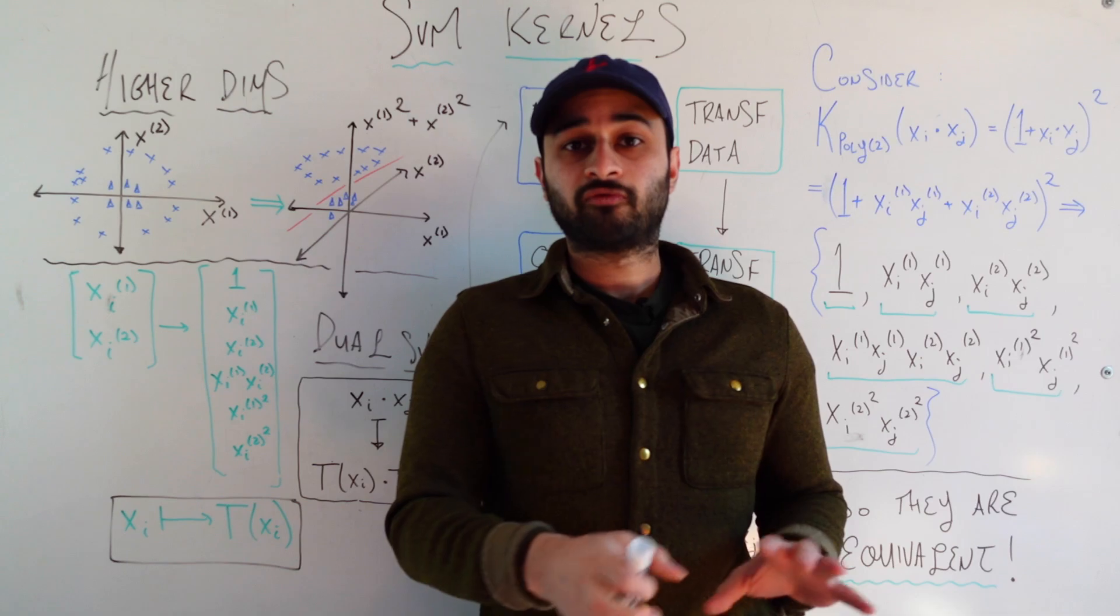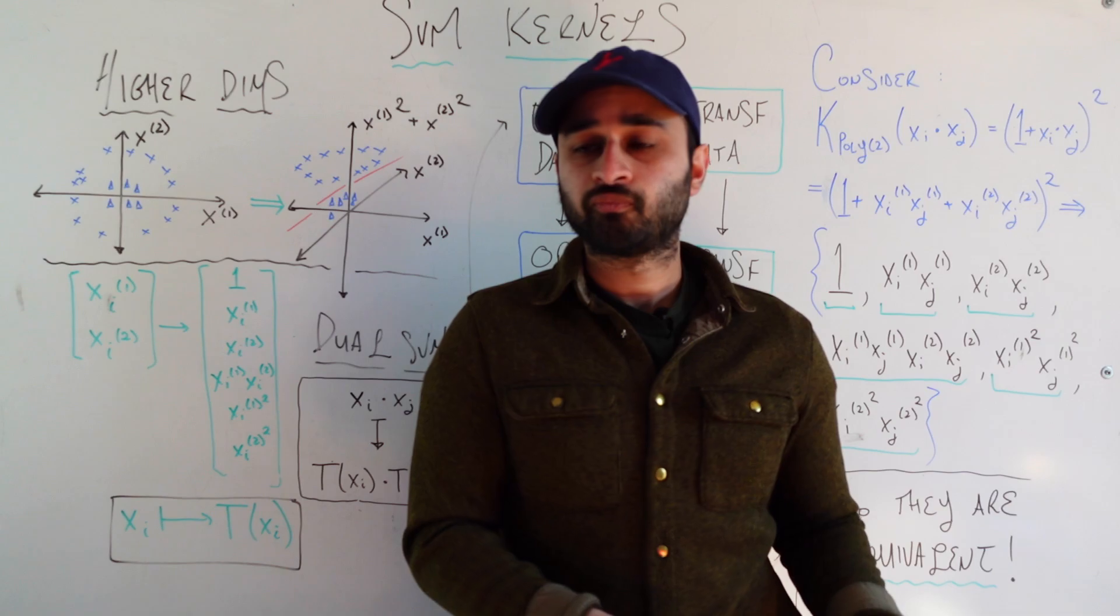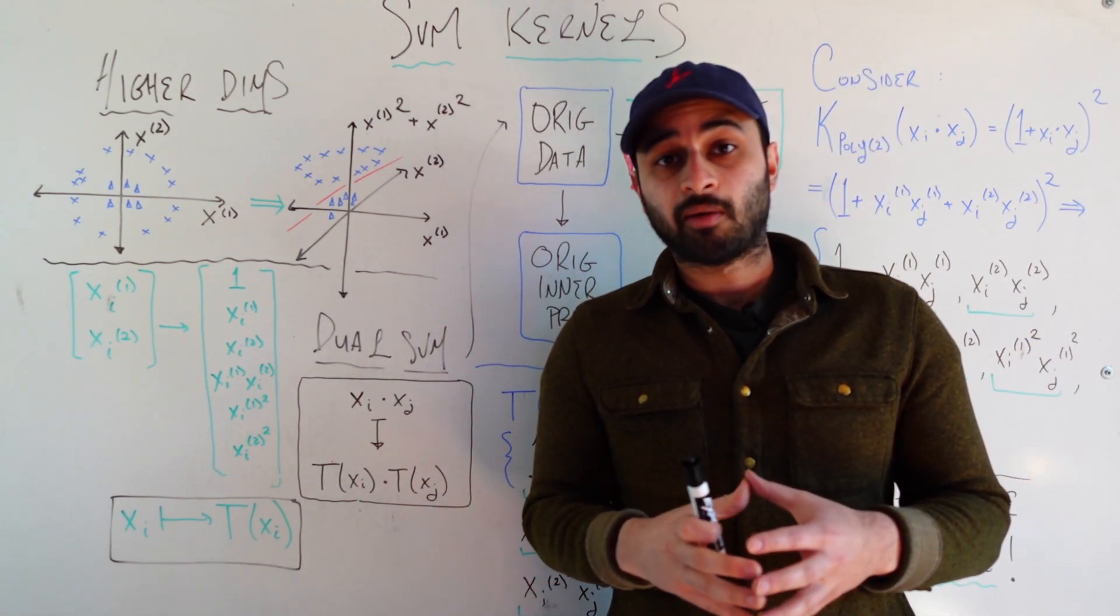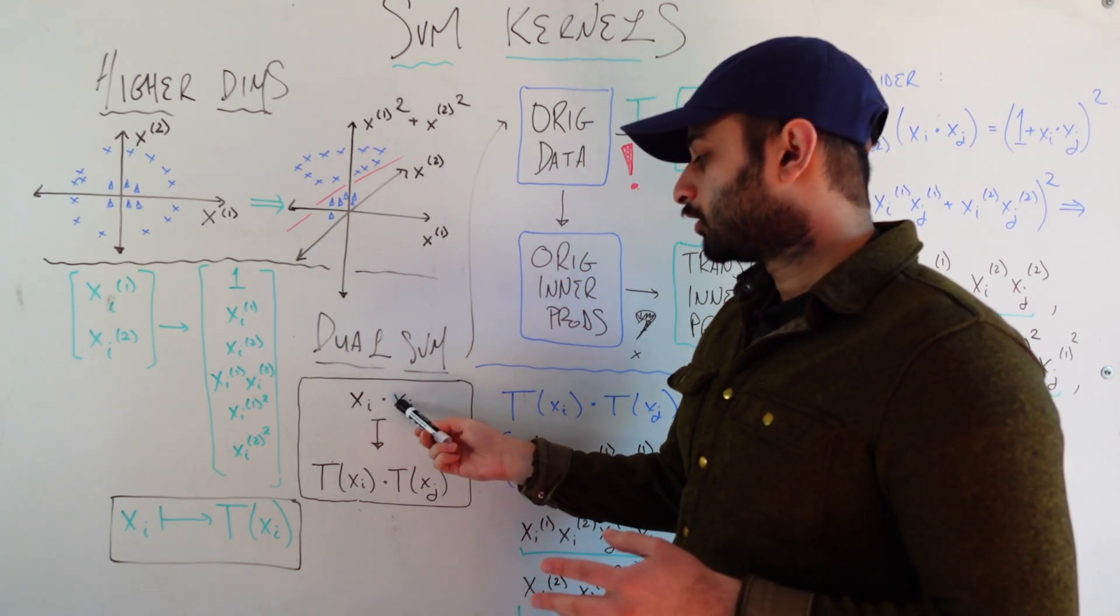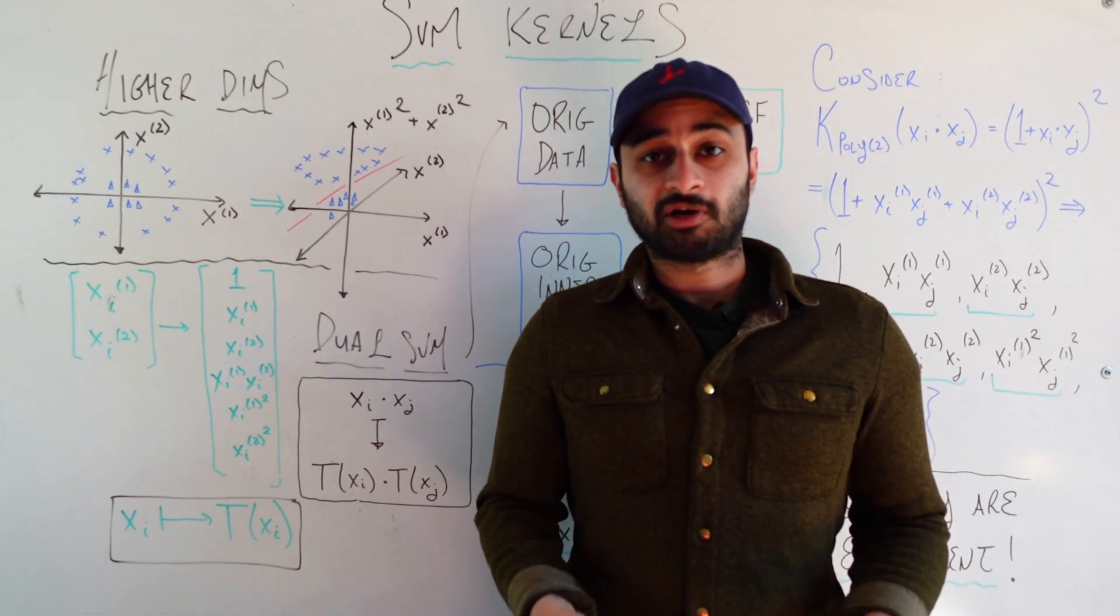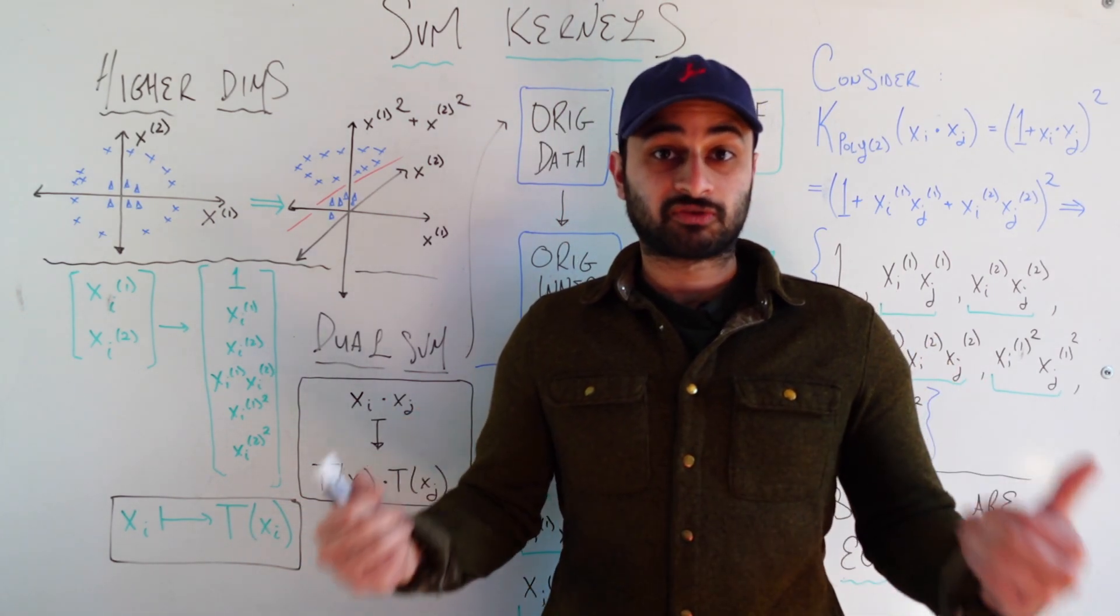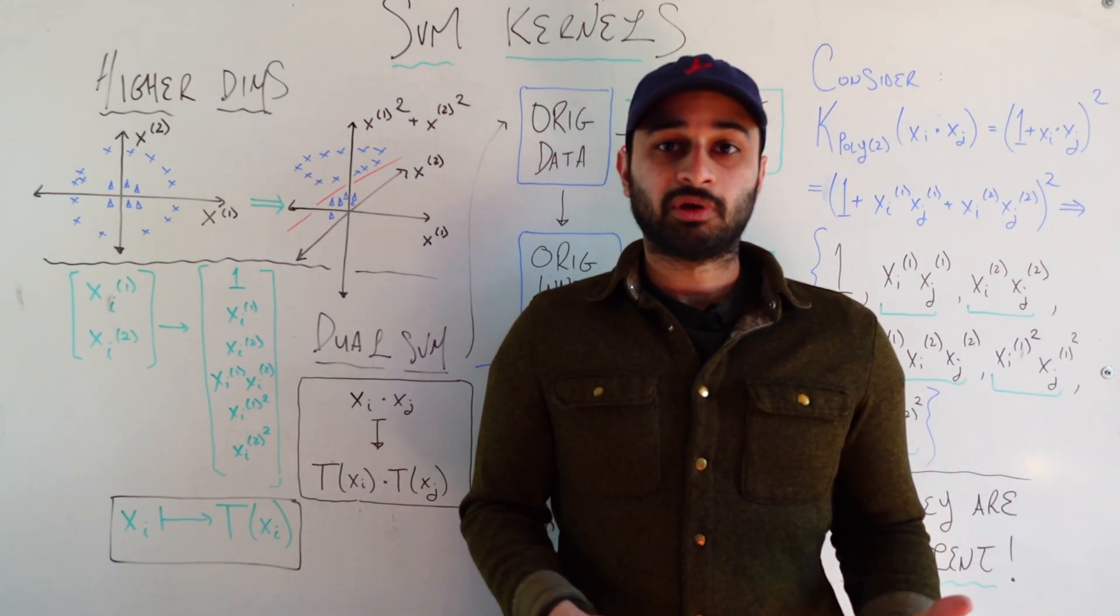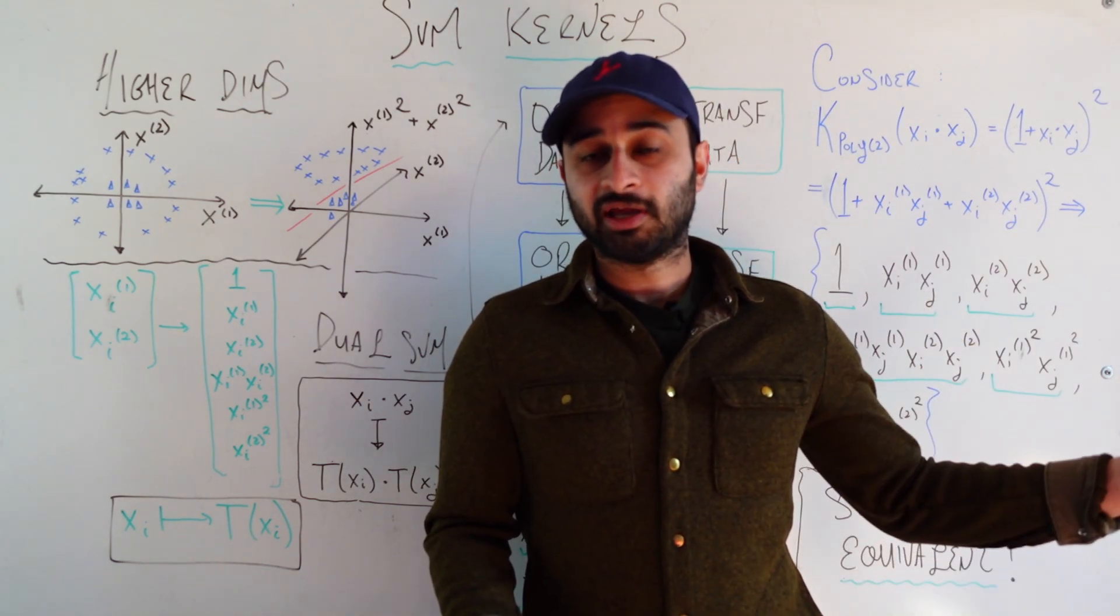Now if we think back to that dual formulation SVM video, and this is why I highly recommend watching that, we said in that dual SVM video that if we represent the SVM problem in its dual form, we only need to care about the inner products between our data. That is, we only care about xi dot xj for all i and j that's in our data. And equivalently, now that we've transformed our data using transformation T, we still now only care about the inner products between the transformed data, which is T of xi dot T of xj, for all i and j in our original data.